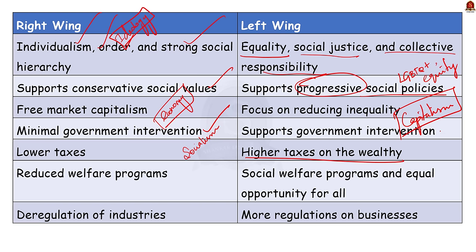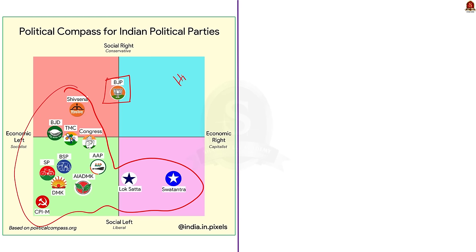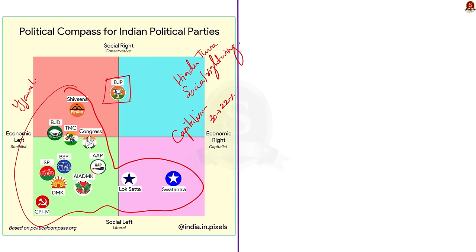In reality, no political party follows the right wing or the left wing ideology 100%. Most parties have qualities of both right and left wing ideology. For example, the right wing in India is often associated with the Bharatiya Janata Party, BJP. They emphasize Hindu nationalism, that is Hindutva, cultural conservatism, and a strong national identity, making the BJP a social right wing party. But in the economic sphere, the BJP has qualities of both. On one hand it supports capitalism by reducing corporate tax from 30% to 22%. At the same time, BJP also supports various social welfare programs like PM Kisan and PM Ujwala. Like this, all political parties fall within the spectrum between right and the left wing.